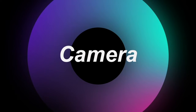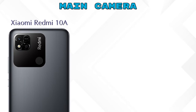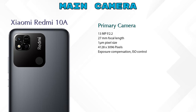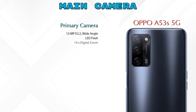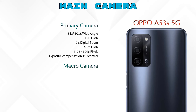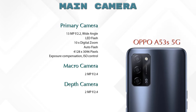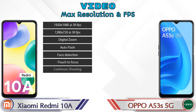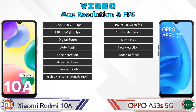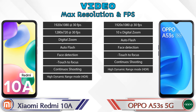Let's see the details about our favorite feature — camera. First, the rear camera: Redmi 10A has one camera which is the primary camera, and A53s 5G has three cameras — primary camera, macro camera, and depth camera. Talking about video camera features, Redmi 10A has eight and A53s 5G has seven different types of features available.